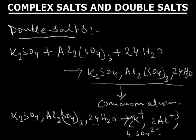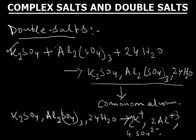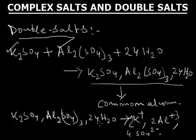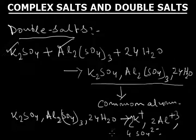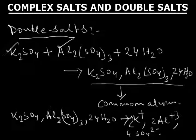Let us again define what a double salt is. A double salt is a salt obtained by mixing two or more salts together. Here, potassium sulphate and aluminium sulphate combine, and this salt — K₂SO₄·Al₂(SO₄)₃·24H₂O — completely breaks down into potassium ions, aluminium ions, and sulphate ions. So, a double salt is formed by mixing two or more salts and it completely ionizes in aqueous solution.